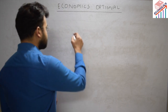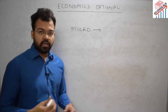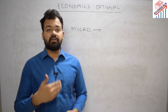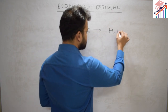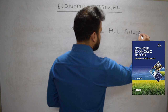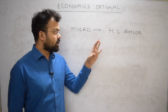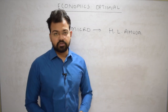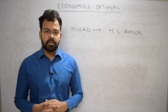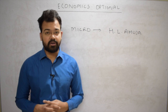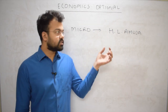In the syllabus, the first section is referred to as advanced microeconomics. The best book for this is HL Ahuja's Advanced Microeconomics — it is a thick book. When you look at it, don't be scared by its size. You have to find the topics mentioned in the syllabus and stick to the index of this book.